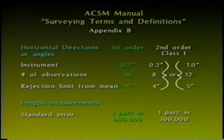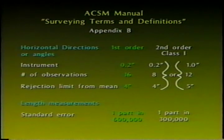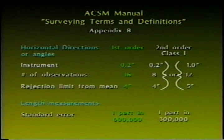The following slide is a table of allowable horizontal and angular error by order of survey. In the example, we can see that if you want to achieve first order accuracy, you must follow the specified procedure and use an instrument that is able to read to 0.2 seconds. You must turn 16 sets of horizontal angles. Also, the standards specify a rejection limit of 4 seconds, meaning that no one set of angles can exceed 4 seconds of angular deviation from the mean of the angles for the set.